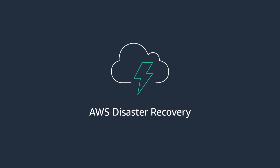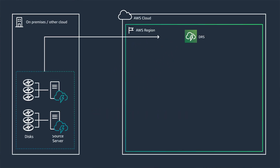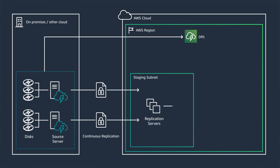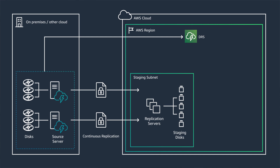With DRS, you choose an AWS region as your disaster recovery target. DRS will continuously replicate your on-prem application servers, including databases, into a staging area within an Amazon VPC using block level replication. This staging area only retains a copy of your data — nothing is turned on, which means you're not paying for anything other than storage.